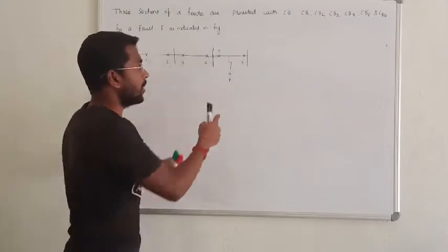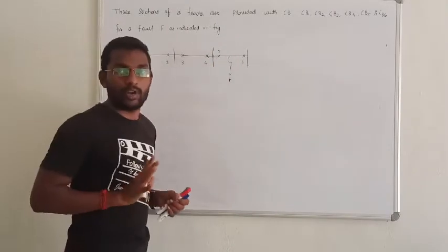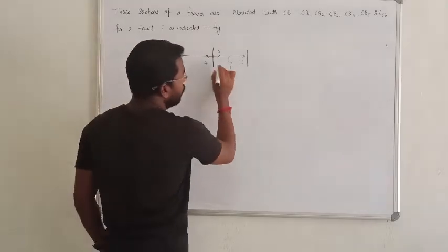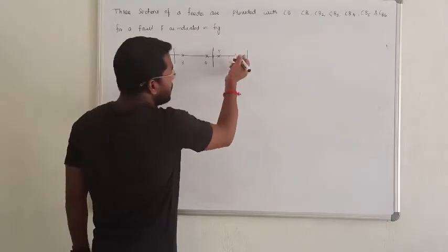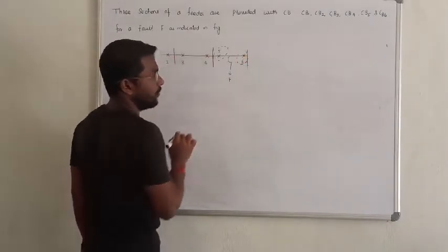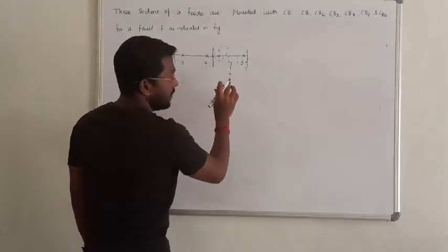So the circuit breaker will trip. On the right side we have circuit breaker 6, and on the left side we have circuit breaker 5. So which one will operate first? If you observe the left side sequence...